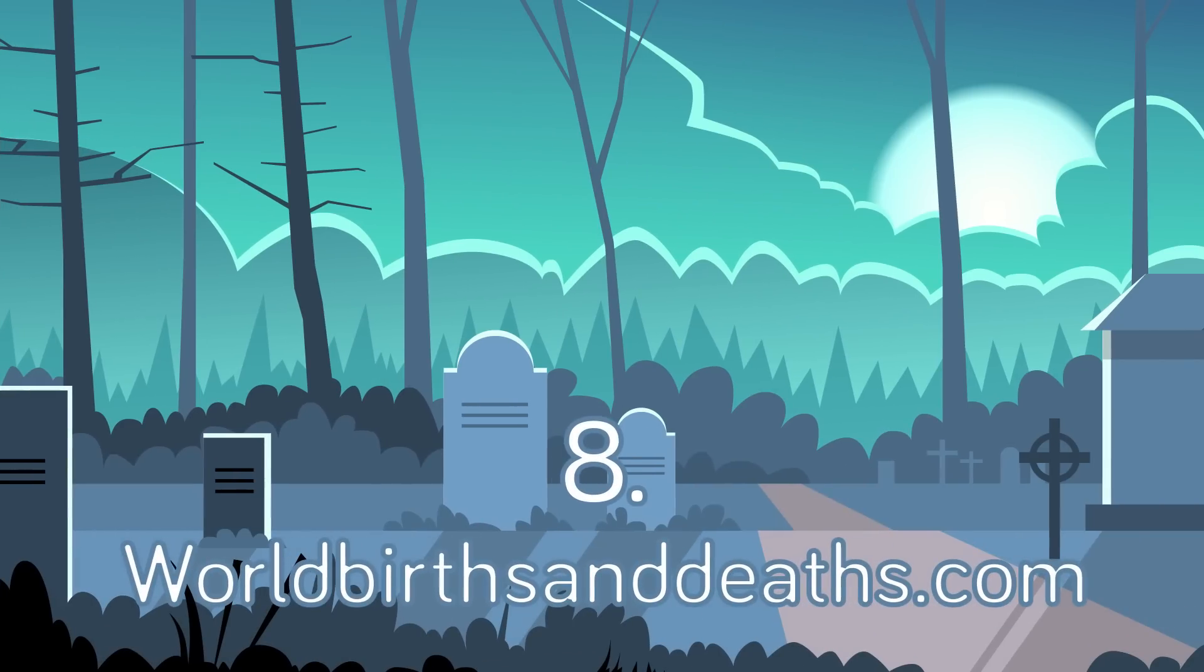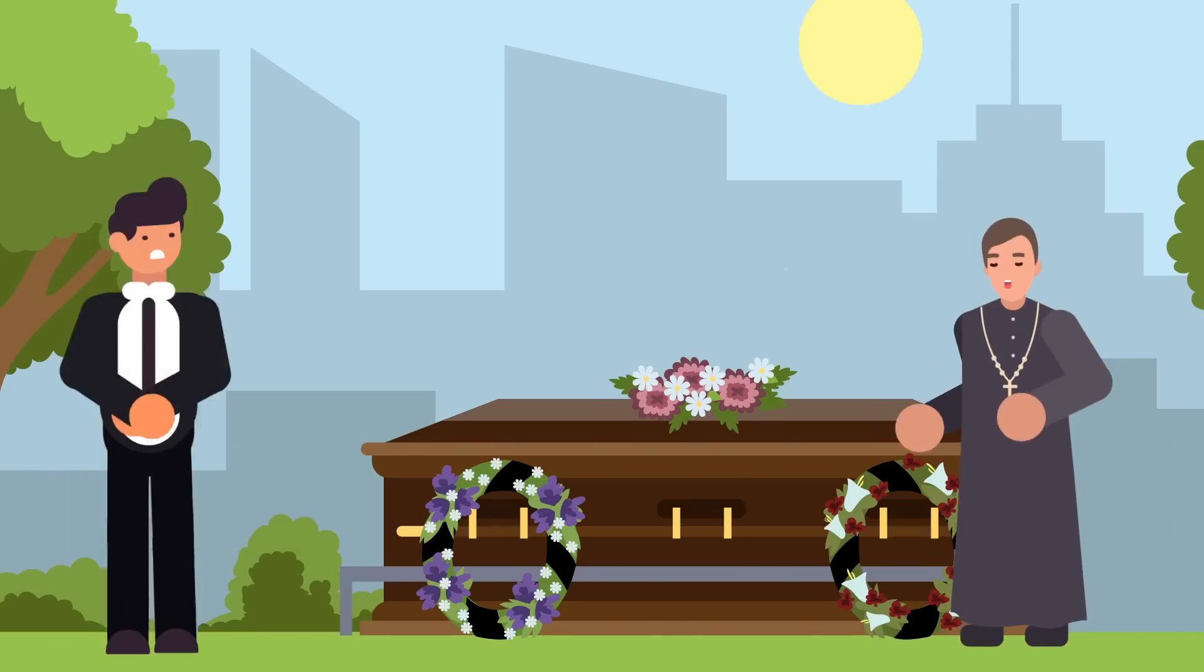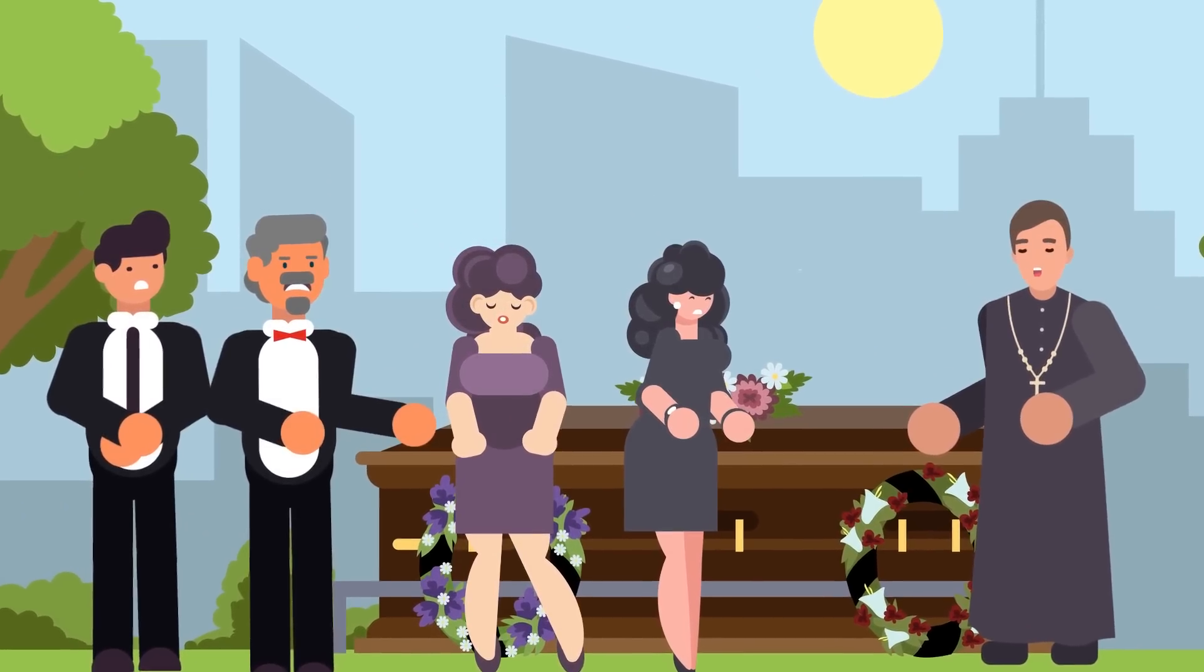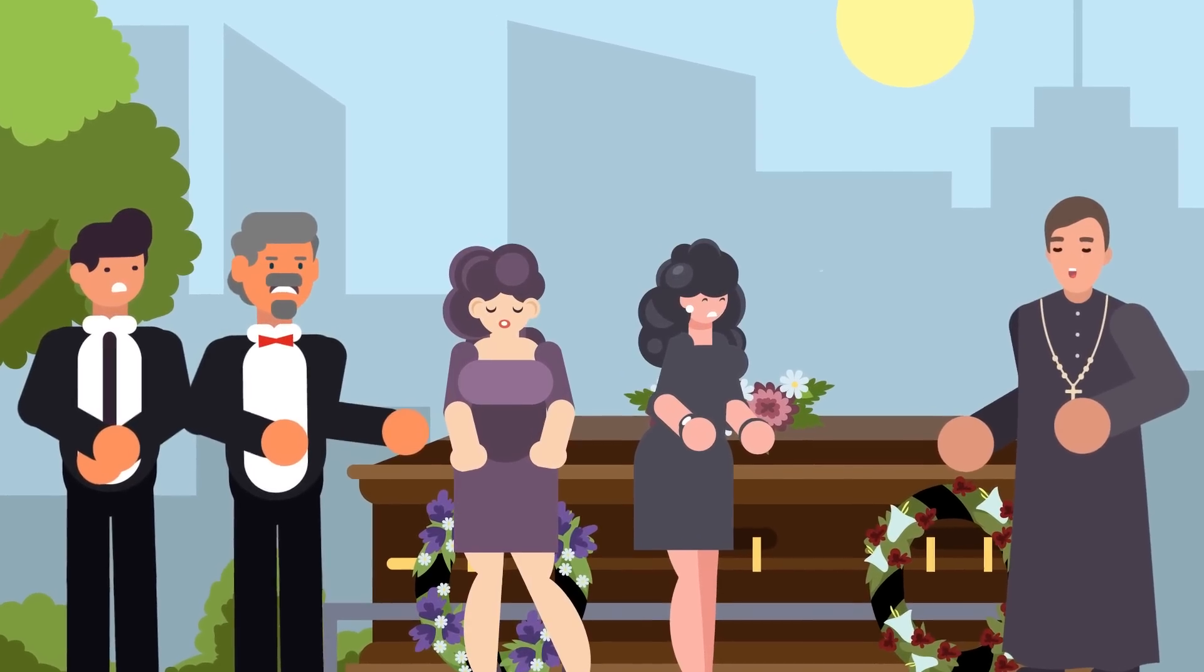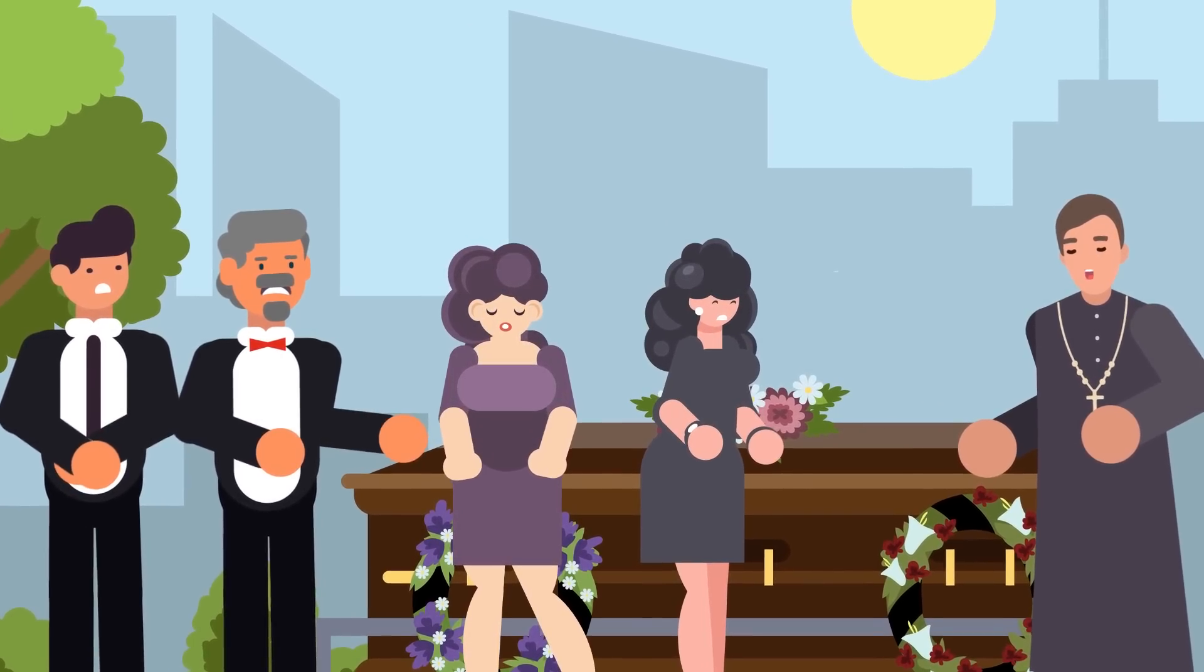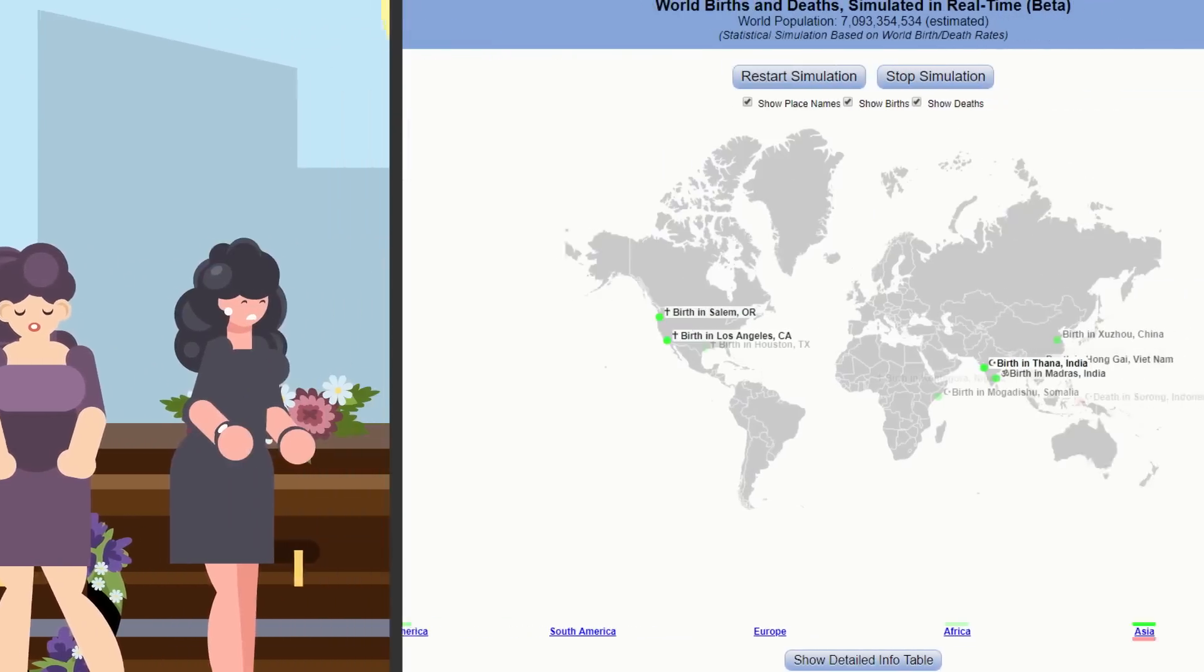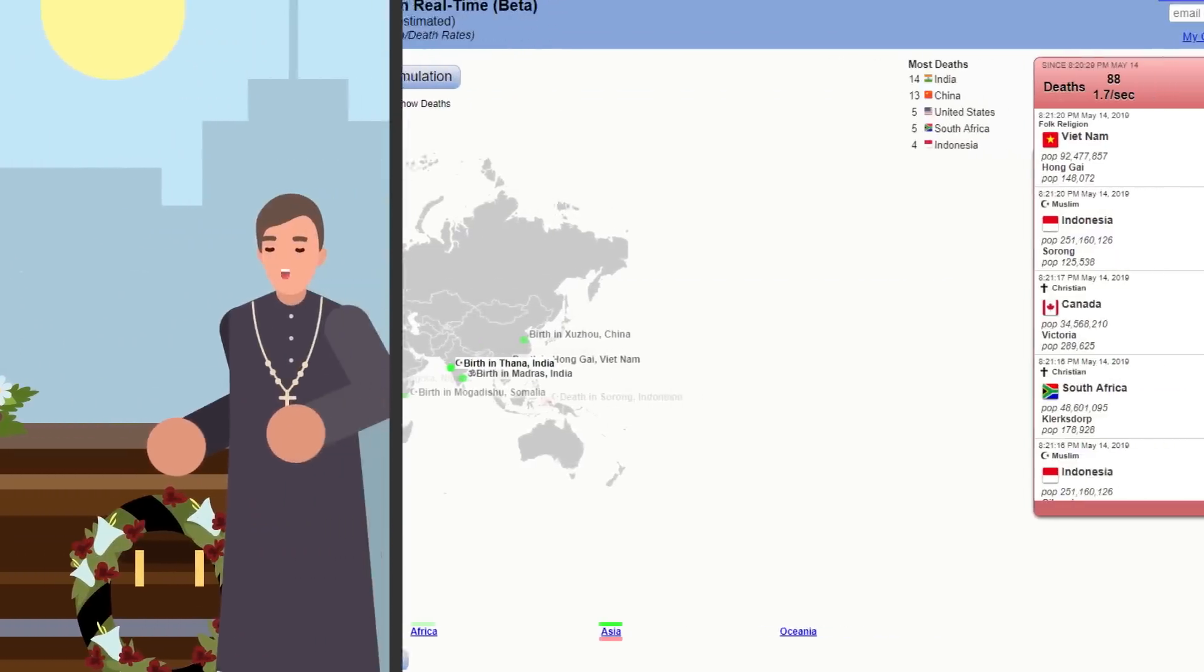Number 8: Worldbirthsanddeaths.com. Want to know if someone's dying right this minute? Of course you don't, but there's a website that will tell you just the same. If there is a death anywhere around the world, you'll see a red dot on the exact location. With the dot, the city and country or state will be indicated. If you unselect birth indicators on the map, it looks even more ominous.